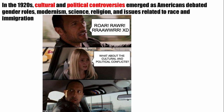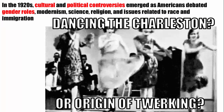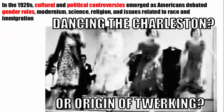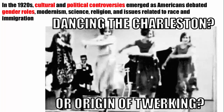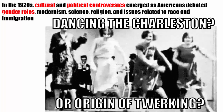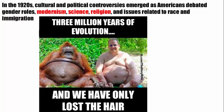In the 1920s, cultural and political controversies emerged as Americans debated gender roles, modernism, science, religion, and issues related to race and immigration. Underneath the roaring 20s, tensions and conflicts were developing. On gender roles, women started the decade with the right to vote via the 19th Amendment. The most common image of women in the 1920s is that of the flapper, breaking down traditional gender roles — though most women were too busy trying to survive to participate in flapper culture.